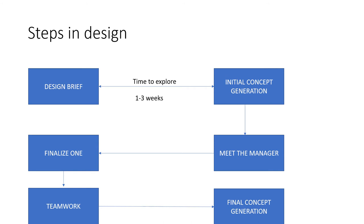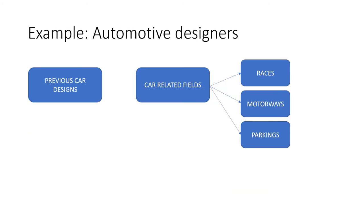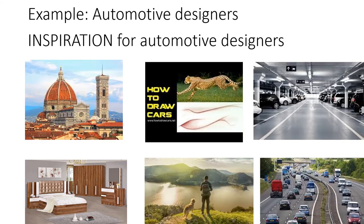The initial concepts are presented to the design managers. The design managers finalize one concept among different designers, and teams are directed to develop design concepts based upon that. Final concept generation is done. For example, automotive designers are given a design briefing to develop a product or modify a car. They seek inspiration from previous car designs and explore car-related fields such as racing tracks, motorways, and parking. They also seek inspiration from architecture, nature, animals, plants, and visits to various places.